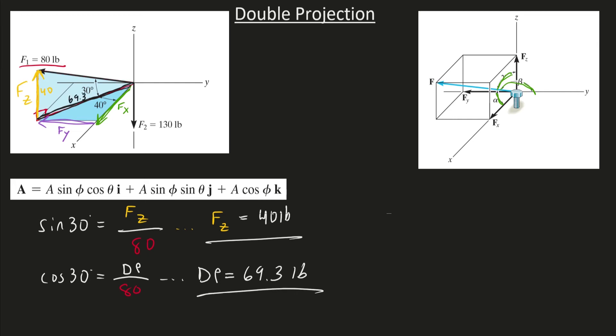Of course, we can do the math. 69.3 pounds there. So now that we know that, now we'll turn our attention to the right triangle on the floor, the right triangle on the X, Y plane, this one right here. The hypotenuse of this triangle is that double projection, that 69.3. And if we're focusing on this 40 degree angle, the adjacent will be the X component and the opposite will be the Y component.